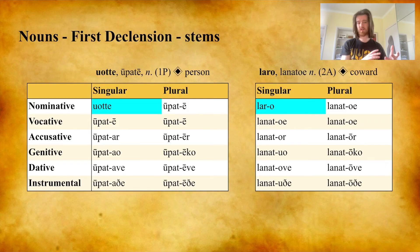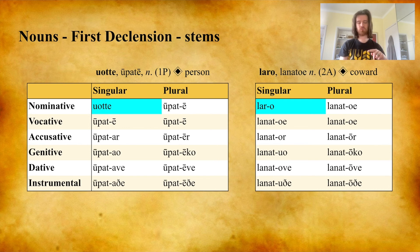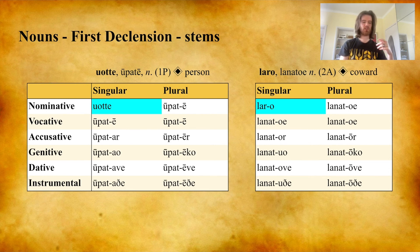Let's look at an example within the second declension as well. From the citation page we have laro, lanatue, meaning coward. This has the nominative singular laro, vocative lanatue, accusative lanator, genitive lanatuo, dative lanatove, instrumental lanatove. And for the plurals: nominative lanatove, vocative lanatove, accusative lanator, genitive lanatoco, dative lanatove, instrumental lanatove.